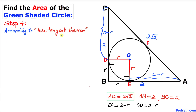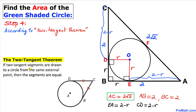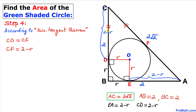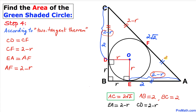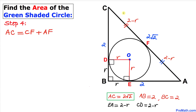Now let's recall the two-tangent theorem: if two tangent segments are drawn to a circle from the same external point, the segments are equal in length. Therefore CD equals CF, and since CD is 2 minus r, CF is also 2 minus r. Likewise, tangent EA equals AF, and since EA is 2 minus r, AF is also 2 minus r.